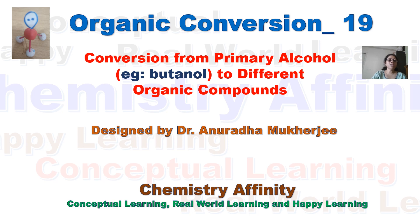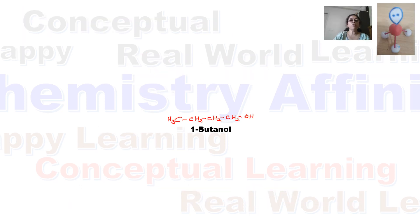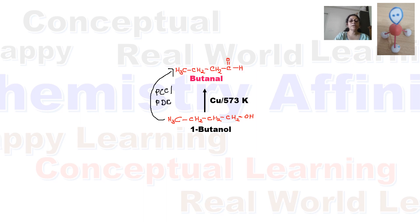Today's organic conversion video will discuss the synthesis of different organic compounds from a primary alcohol. When 1-butanol is treated with copper at 573 Kelvin, or a mild oxidizing agent like PCC or PDC, it converts into an aldehyde — butanal.